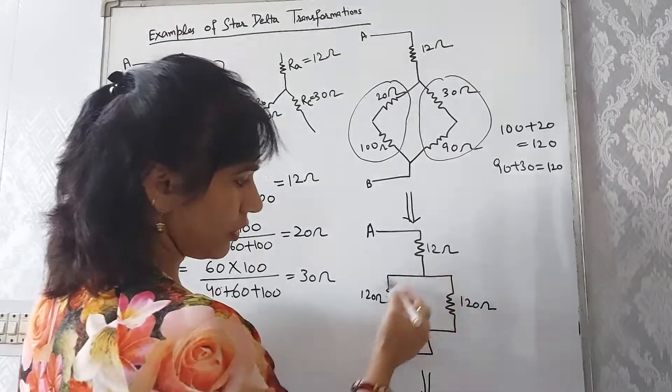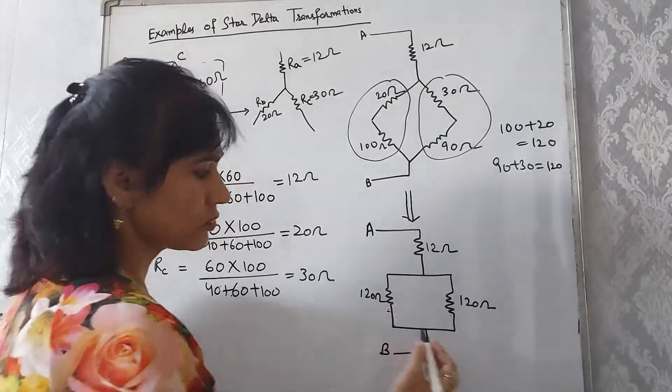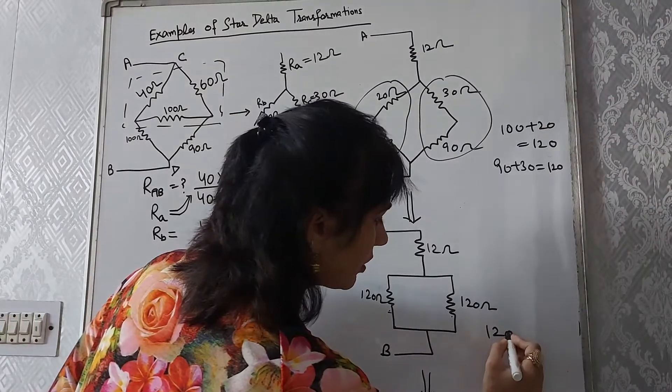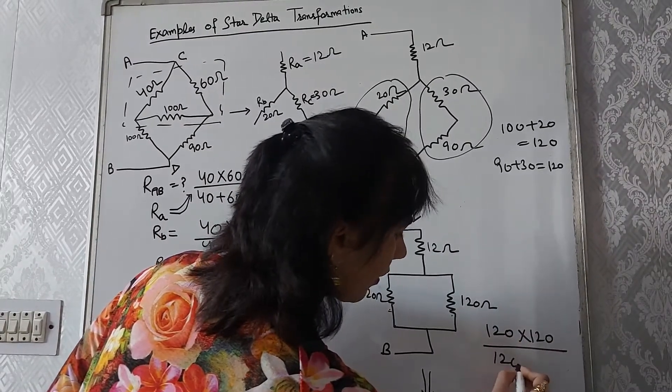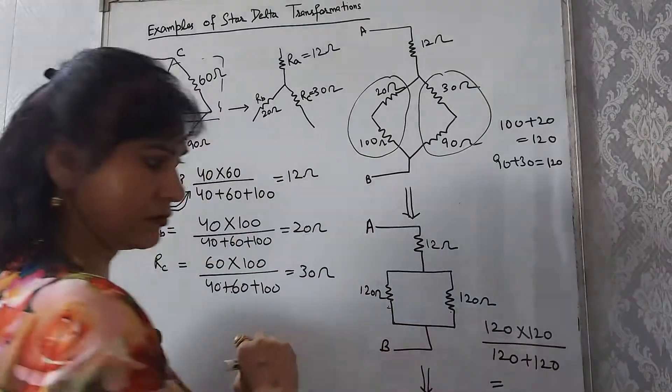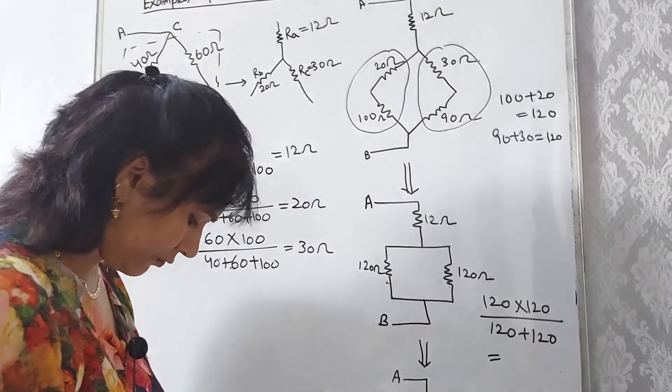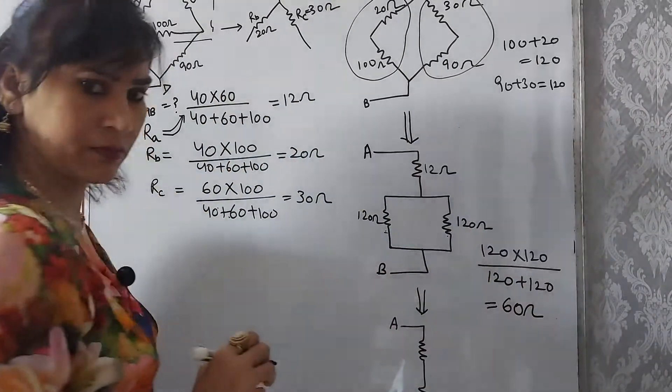Now if we look into this circuit, these two resistances are in parallel with each other. So this parallel combination is solved, and it will become 60 ohm.